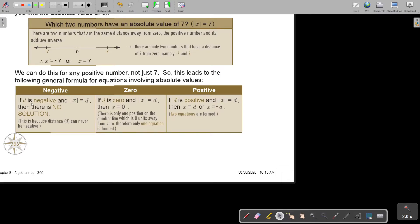If D is negative, then |X| = D has no solution because absolute value can only be positive. If you see absolute value equals a negative value, then you say no solution. This is because distance can never be negative.